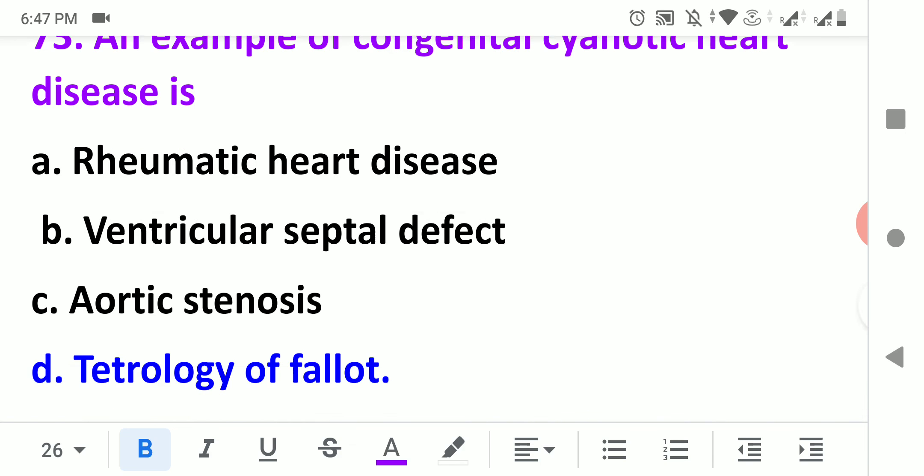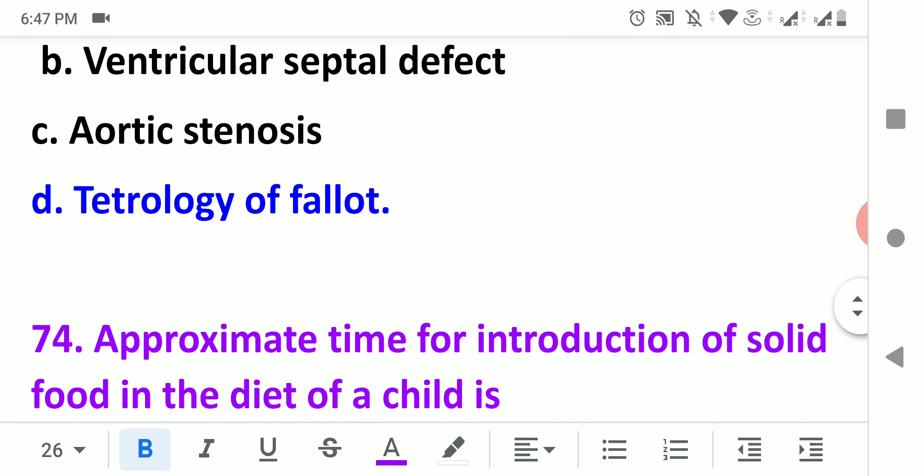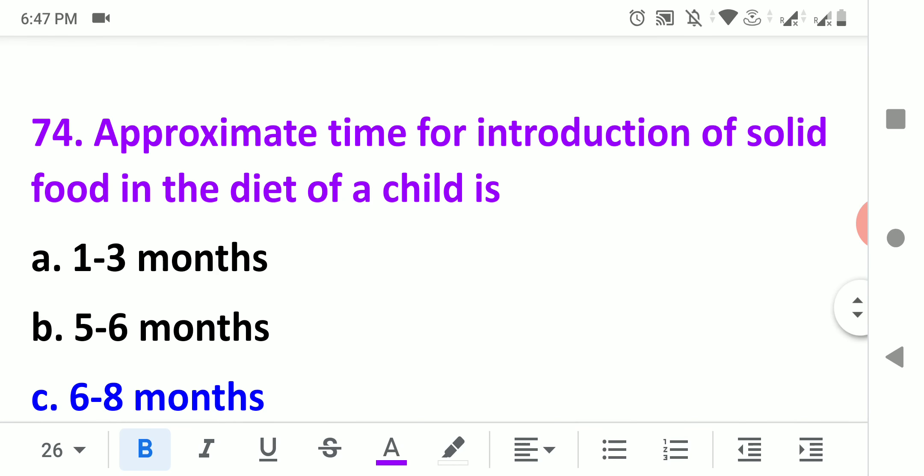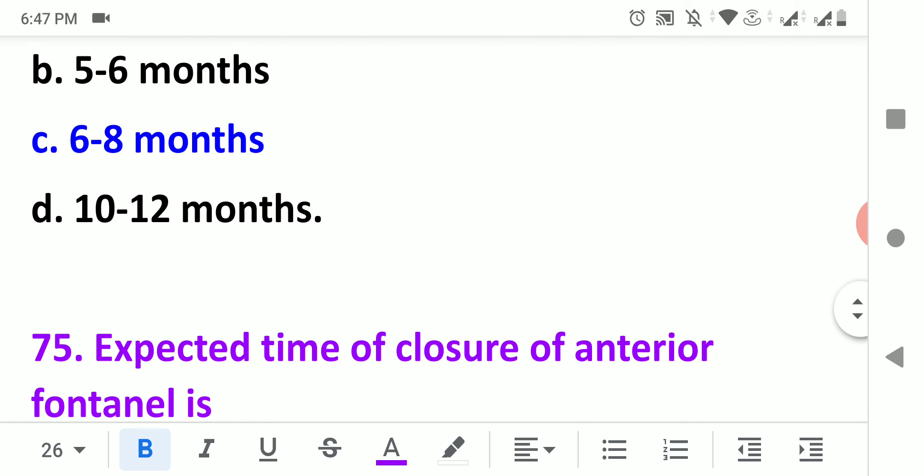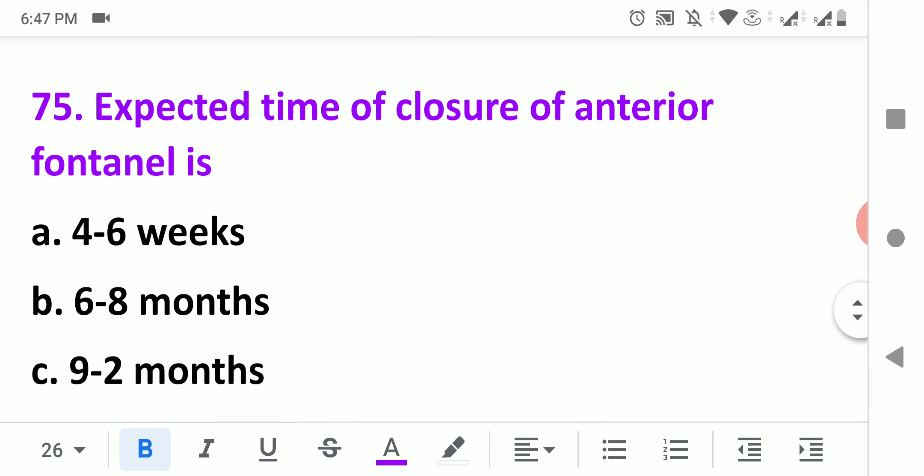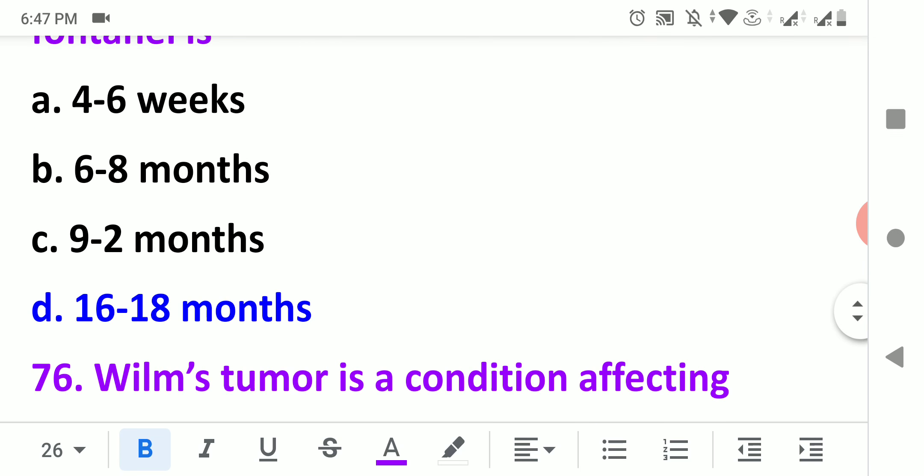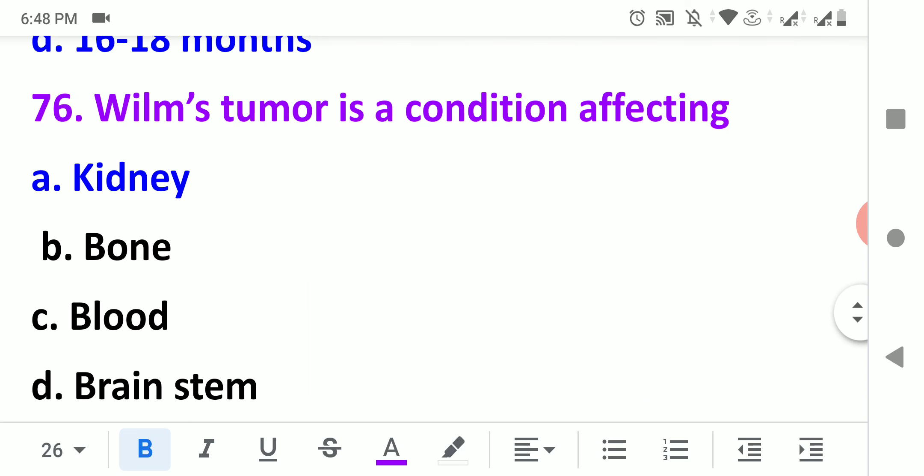An example of congenital cyanotic heart disease is tetralogy of Fallot. Approximate time for introduction of solid food in the diet of a child is 6 to 8 months. Expected time of closure of anterior fontanel is 16 to 18 months. And posterior fontanel is closed in 4 to 6 weeks.